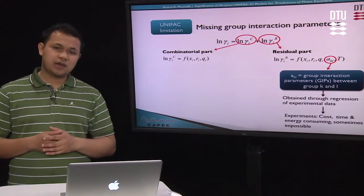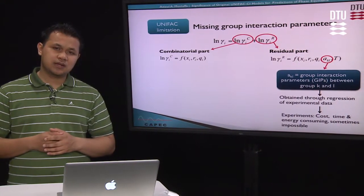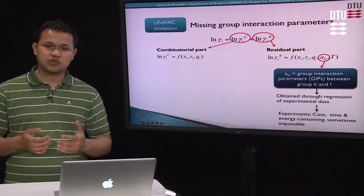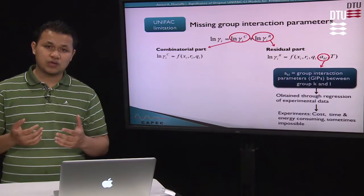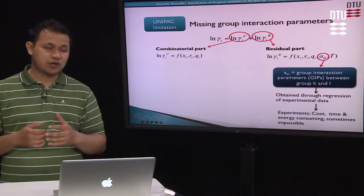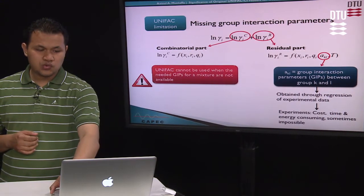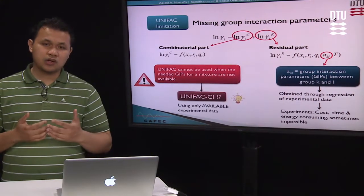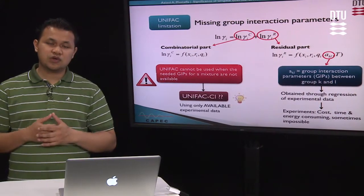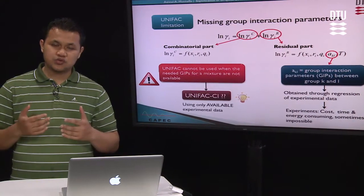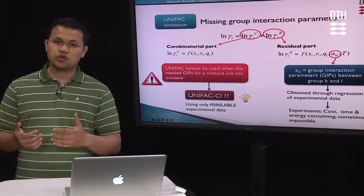However, in order to conduct experiments, it can be cost, energy, and time consuming, and also impossible due to safety issues, for example. Therefore, one possible solution that we are suggesting through our work is to use the UNIFAC CI model, which can be used to predict those missing group interaction parameters with the aid of valence connectivity indices and also using only available data that we have.